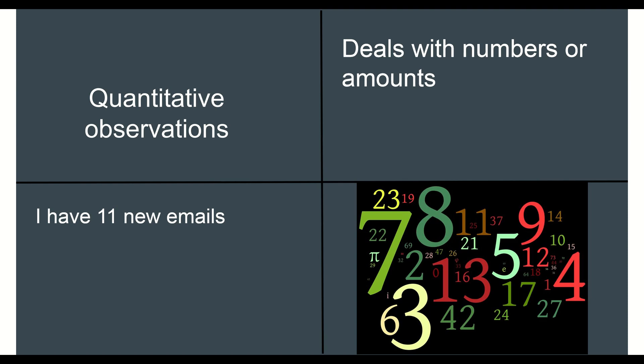The next one is quantitative observations. The definition of quantitative observations is it deals with numbers or amounts. An example could be I have 11 new emails. A good way to remember this: this part right here is very close to the word quantity, and that's where quantitative is coming from. A quantity of something, you have a certain number of something. If you're ordering something online it'll ask for how many you want and it'll ask for the quantity. Quantity is always a number.